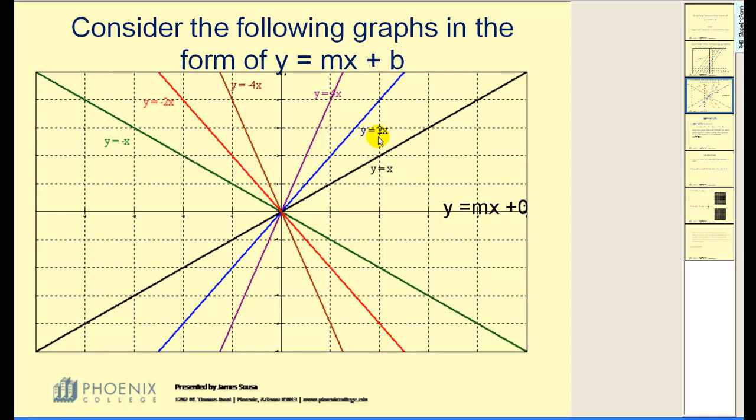The blue line is y equals 2x, and as I increase m, the line gets steeper. The line gets steeper as it moves from left to right. I always refer to slope from left to right as you read a book just to keep it consistent.